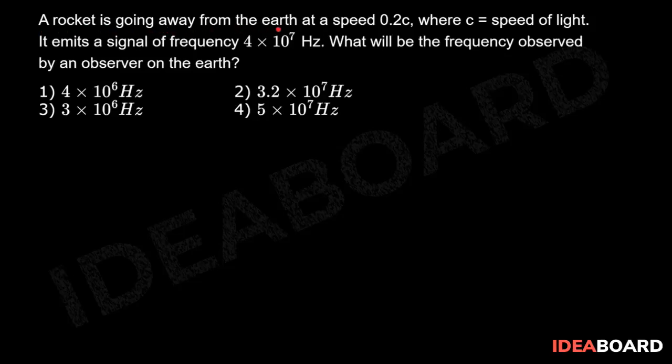A rocket is going away from the earth at a speed 0.2c, where c equals speed of light. It emits a signal of frequency 4 × 10^7 Hz. What will be the frequency observed by an observer on the earth?